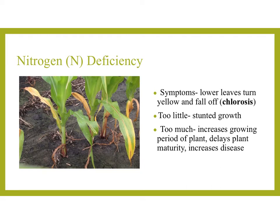So what happens if there's a nitrogen deficiency? Some of the symptoms will be lower leaves that turn yellow and fall off, which is known as chlorosis. There could be too little, causing stunted growth. There could be too much, which increases the growing period of the plant, delays plant maturity, and increases disease.